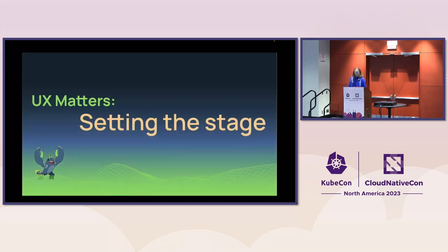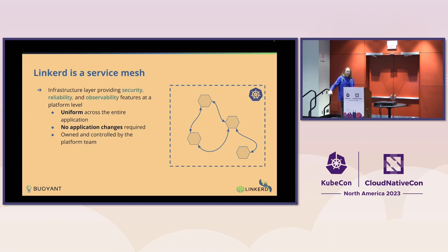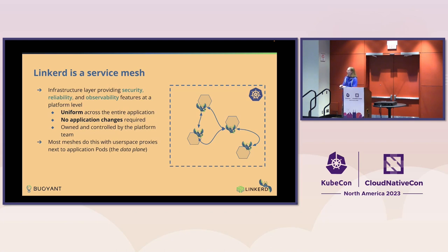Setting the stage: Linkerd is a service mesh. If you imagine your typical Kubernetes cluster where you've got microservices all talking to each other, the point of a service mesh is to go in underneath your application and provide security, reliability, and observability uniformly without having to change your application. Linkerd does this by sticking sidecars next to each of your application pods. The sidecars ruthlessly take over all of your network communication, force it to be MTLS, mediate retries, measure things, and provide uniform observability across the whole call graph.